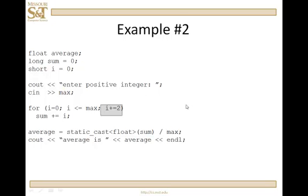Suppose I want to change things just a little bit — the same process except I'm going to add every other integer. I can simply change the update to i plus equals two instead of i plus plus. That's going to add two each time. There is a miscalculated average in this slide, but you see the point nonetheless.